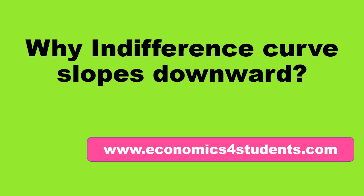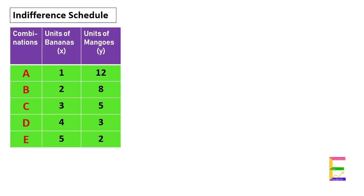Welcome to Economics for Students. In this video, we are going to understand why indifference curves slope downward. To understand this concept, let us consider this indifference schedule of a consumer. It shows five different combinations of two goods: bananas and mangoes.